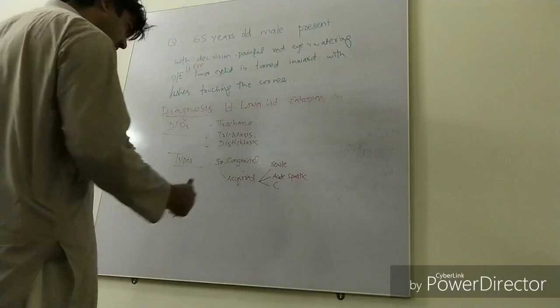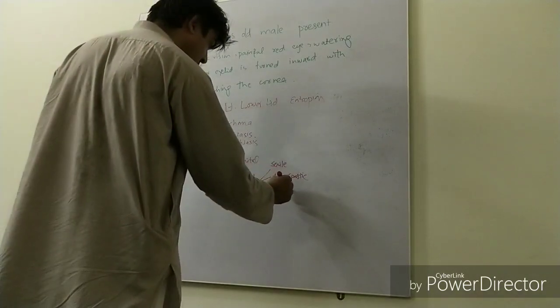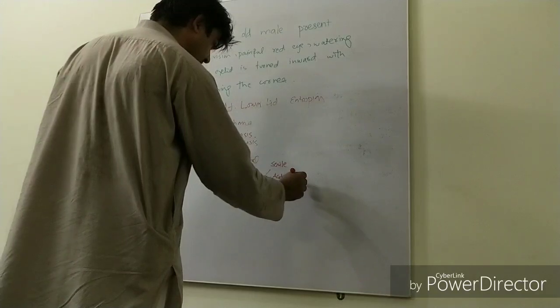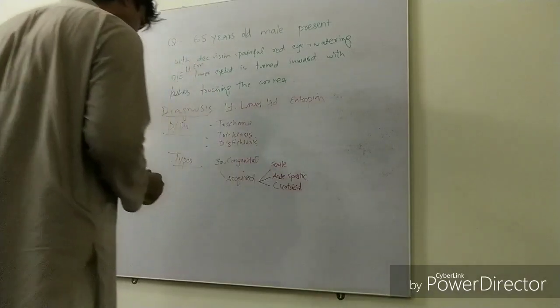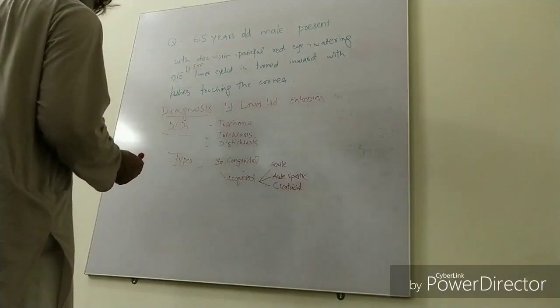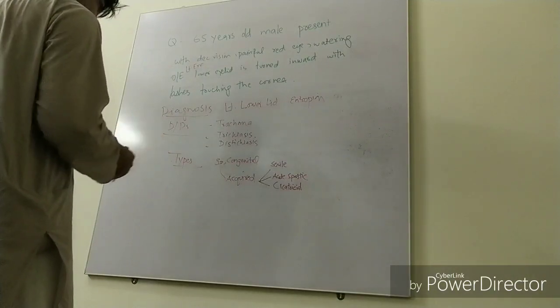These are the types of entropion. Then they ask you about the treatment. Treatment of any disease is divided into medical and surgical. For medical options, you should lubricate the eye.